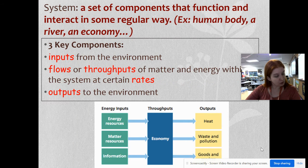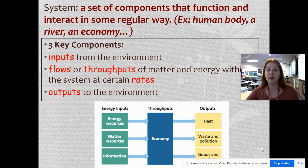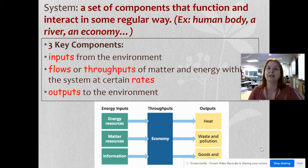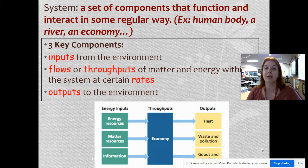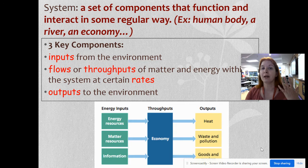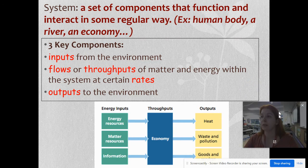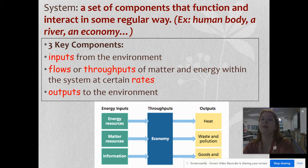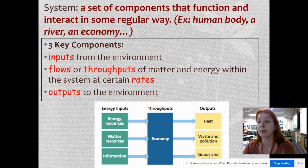This goes along with pages 19 and 20 of your packet. A system is a set of components that function and interact in some regular way. You can think of something as easy as a human body, a river, or an economy. You have three key components: inputs from the environment, flows or throughputs of matter and energy within the system at certain rates, and then outputs to the environment.